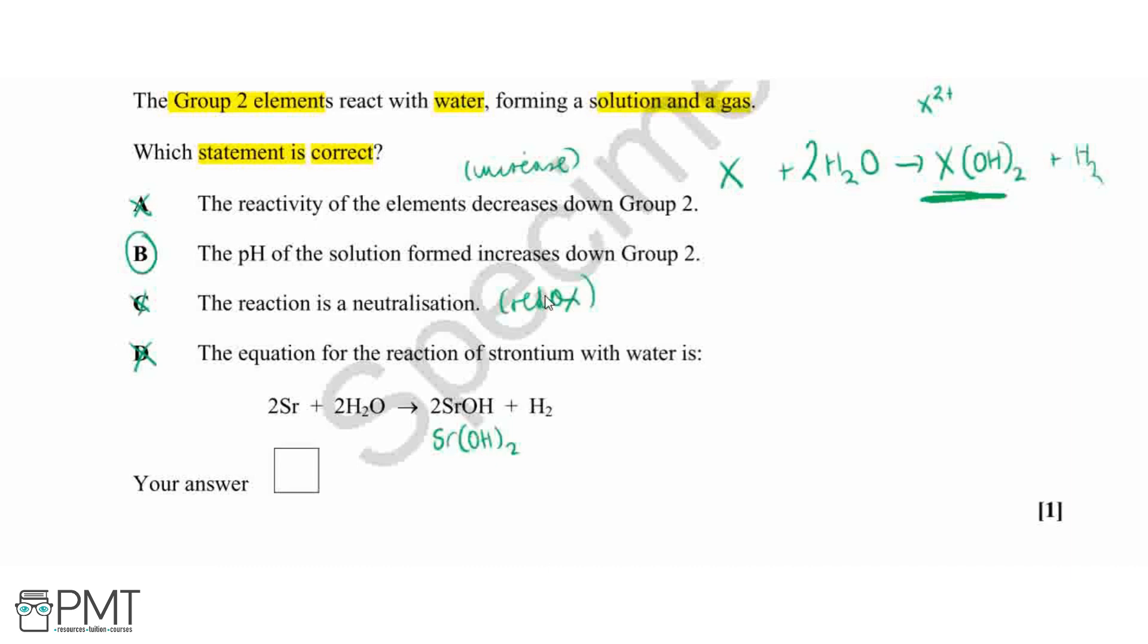As we go down the group, as I mentioned before, the atomic radius is going to increase as we have increased number of electron shells. And what this means is as we go down group 2, the 2+ ion which we form is going to be less charge dense, because that charge is going to be spread out over a larger volume of that ion.